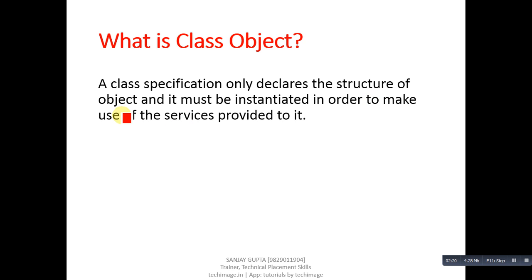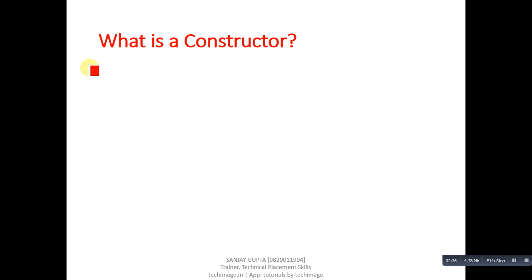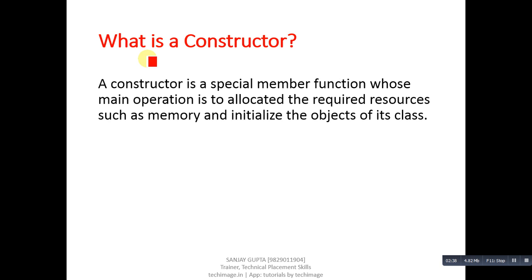Next question: what is a class object? Answer: a class specification only declares the structure of an object and it must be instantiated in order to make use of the services provided by it. This process of creating objects of the class is called class instantiation.